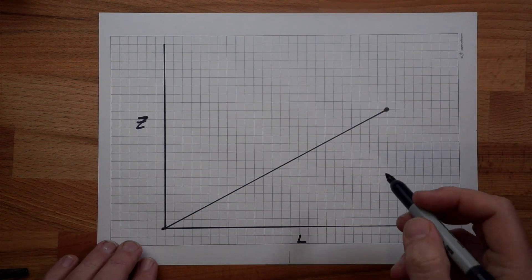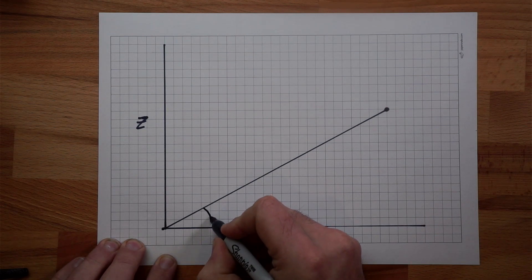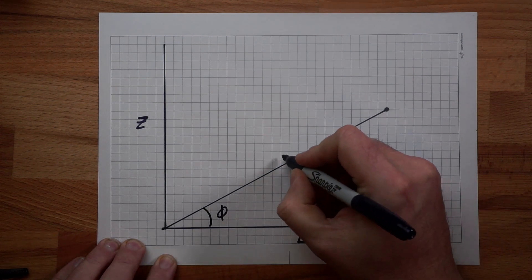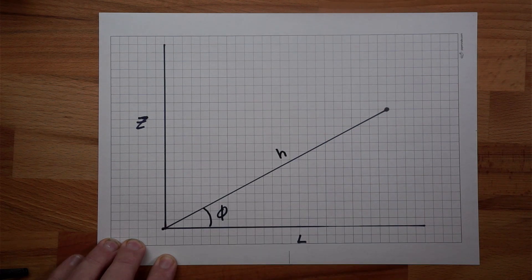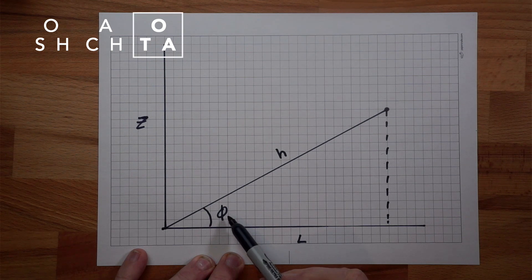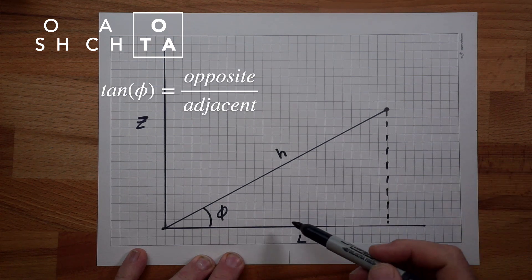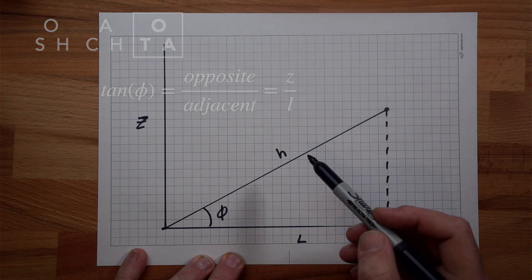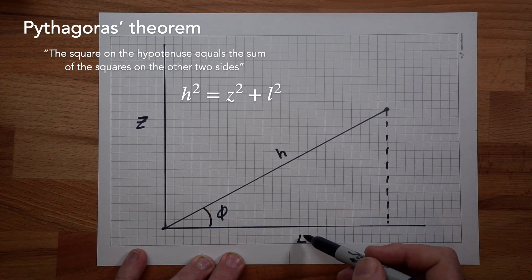Now in order to move our arm to the right point we're going to need to know two things. We're going to first of all need to know what angle that we need to move here and we're going to need to know the length of this arm. We'll call them Phi and H. So using the same maths as before we know that tan of this angle here Phi will equal the opposite over the adjacent which is z over L. And we know that the square of H will equal the square of z plus the square of L.